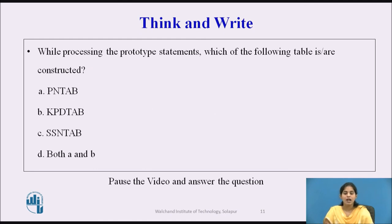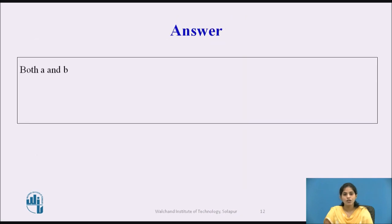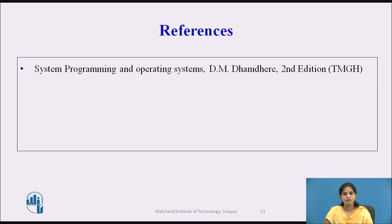While processing the prototype statement, which of the following tables are constructed? Option A: PN tab, Option B: KPDT tab, Option C: SSN tab, Option D: Both A and B. The answer is both A and B — during processing of the prototype statement, both the PN tab (Parameter Name Table) and the Keyword Parameter Default Table are constructed.